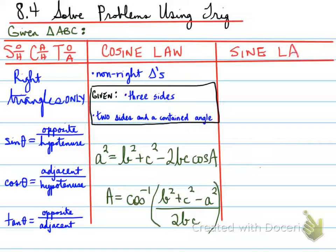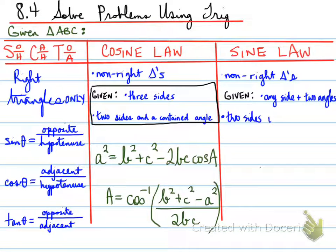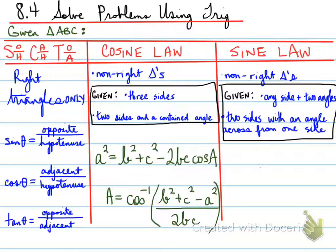Last but not least, sine law. Basically, we use sine law for non-right triangles, and anytime you can't use cosine law, you must use sine law. What conditions make you use sine law? Well, that is if you're given the following: any side plus two angles, or you're given two sides with an angle across from one of those sides. So two sides with an angle across from one of those sides. That means it can't be contained. If it's contained, it's cosine law. If it's not contained, it's sine law.